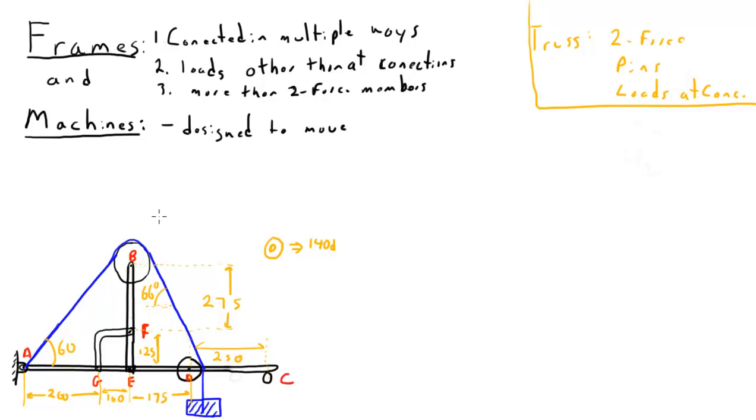So quite often machines will have things like pulleys, springs, and levers, and those sorts of things in them where a frame wouldn't. However, the way we analyze the two is very, very similar. In fact, we've learned essentially what we need to do to analyze these because we're going to do everything using the method of sections. But our sections are going to be a little more complicated than they would be for trusses.